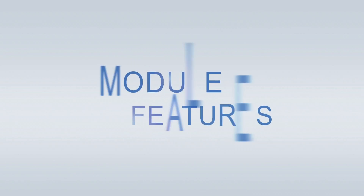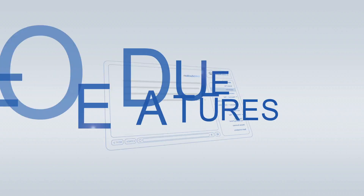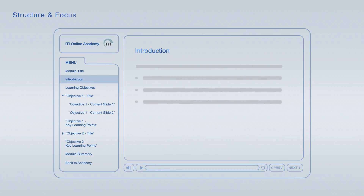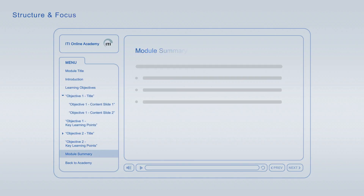ITI Online Academy Learning Modules offer a wide variety of features to optimize your learning. Every module starts off with an introduction that is followed by the learning objectives, giving you an overview of the main topics and learning goals covered. Each of the learning objectives is discussed in an individual topic chapter that concludes with a list of its key learning points. The summary, at the end of each module, combines the major key learning points across all learning objectives for final repetition and focus.